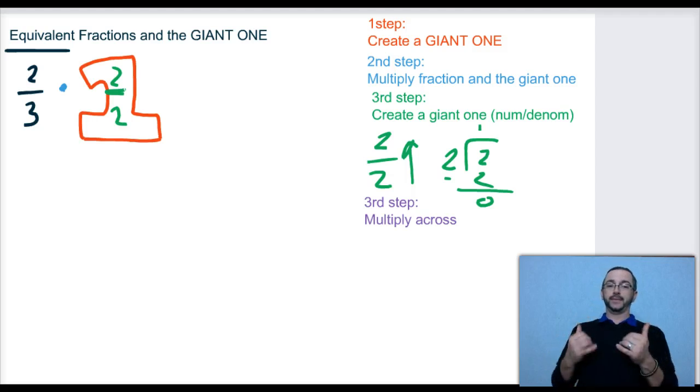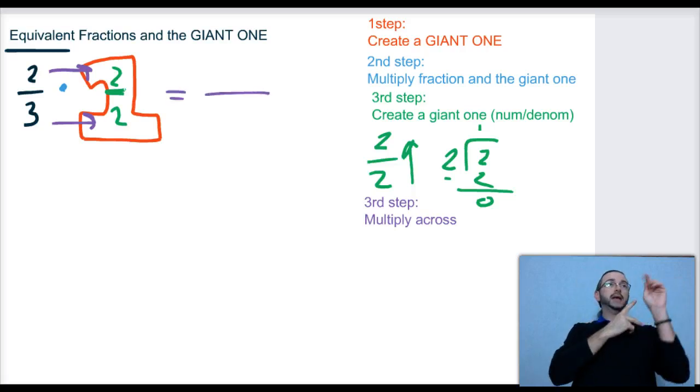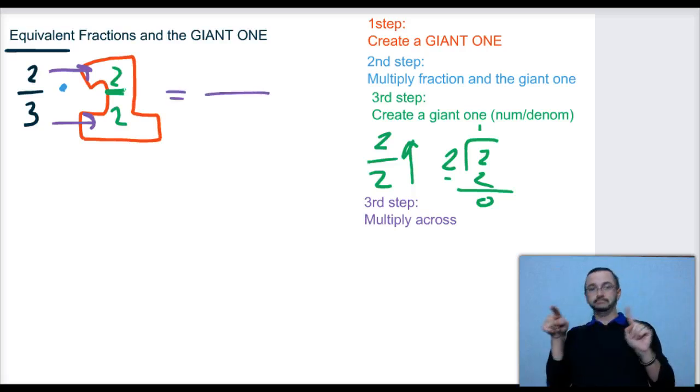Our third step and final step is just multiply across. When we multiply fractions, we literally multiply across, multiplying the numerator times the numerator and the denominator times the denominator. So what that looks like is 2 times 2 and 3 times 2.